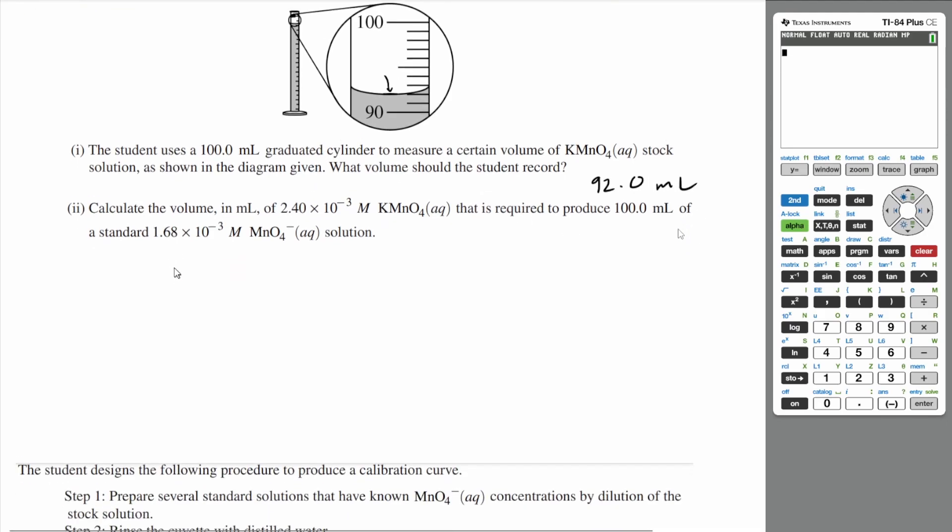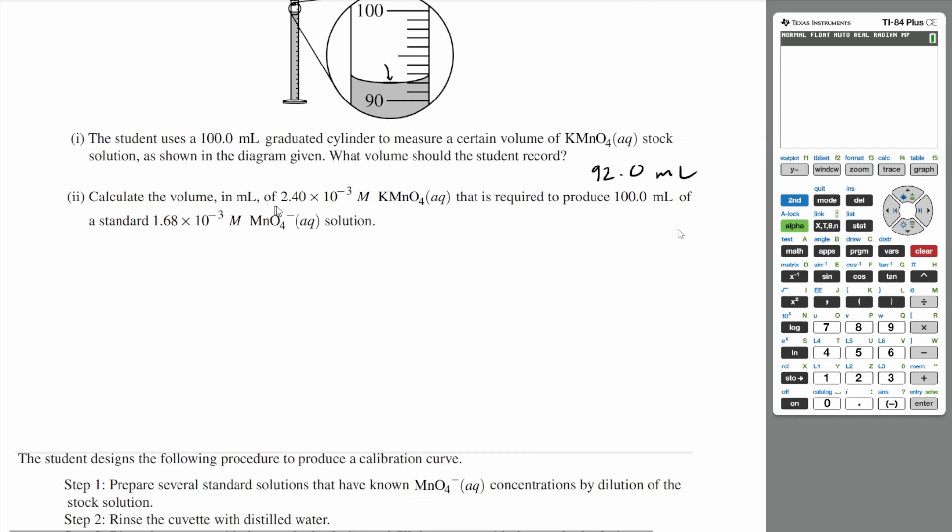Let's go to part 2. Calculate the volume in milliliters of 2.40 times 10 to the negative 3 molar potassium permanganate that is required to produce 100 mL of a standard 1.68 times 10 to the negative 3 molar permanganate solution. This is a clear dilution problem.